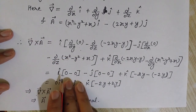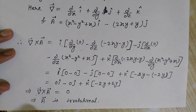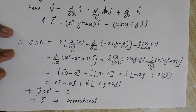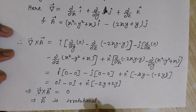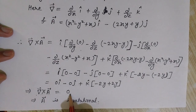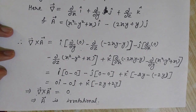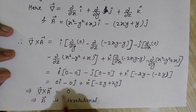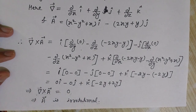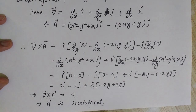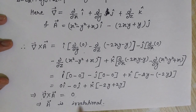So all three components — î, ĵ, and k̂ — are zero. Therefore, the curl of vector A equals zero, which means vector A is irrotational. We have proved this. If the curl were not zero, we would say it is a rotational vector. Curl means rotation, so if the rotation is zero, it is irrotational — that is the mathematical concept from the perspective of engineering mathematics.